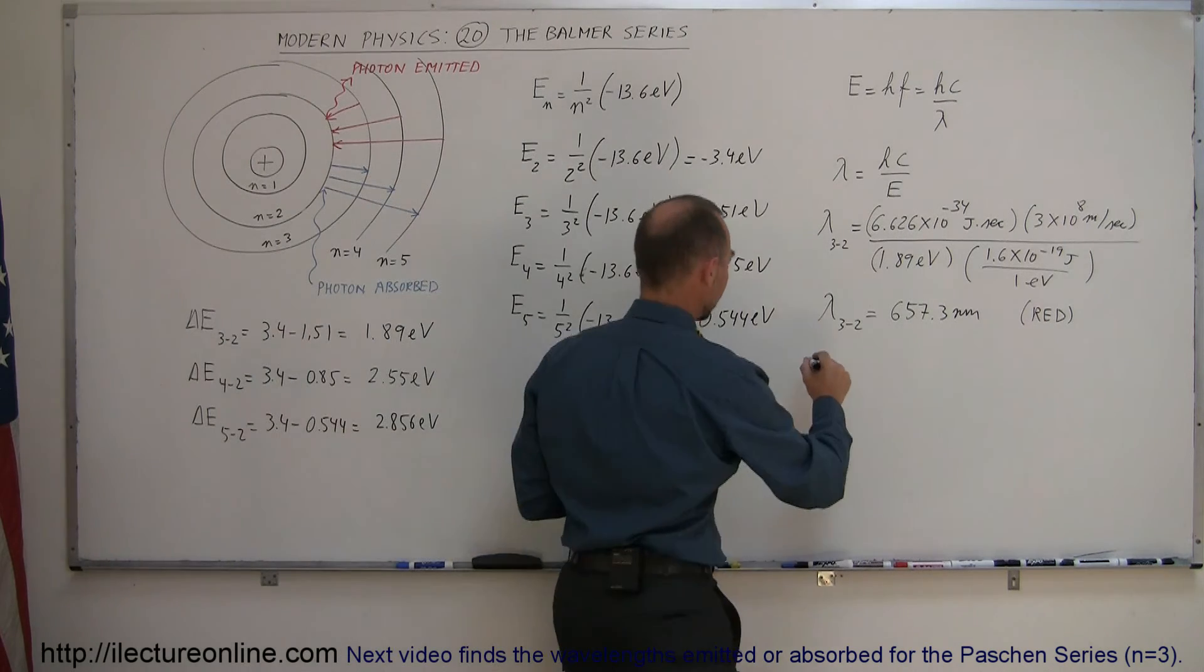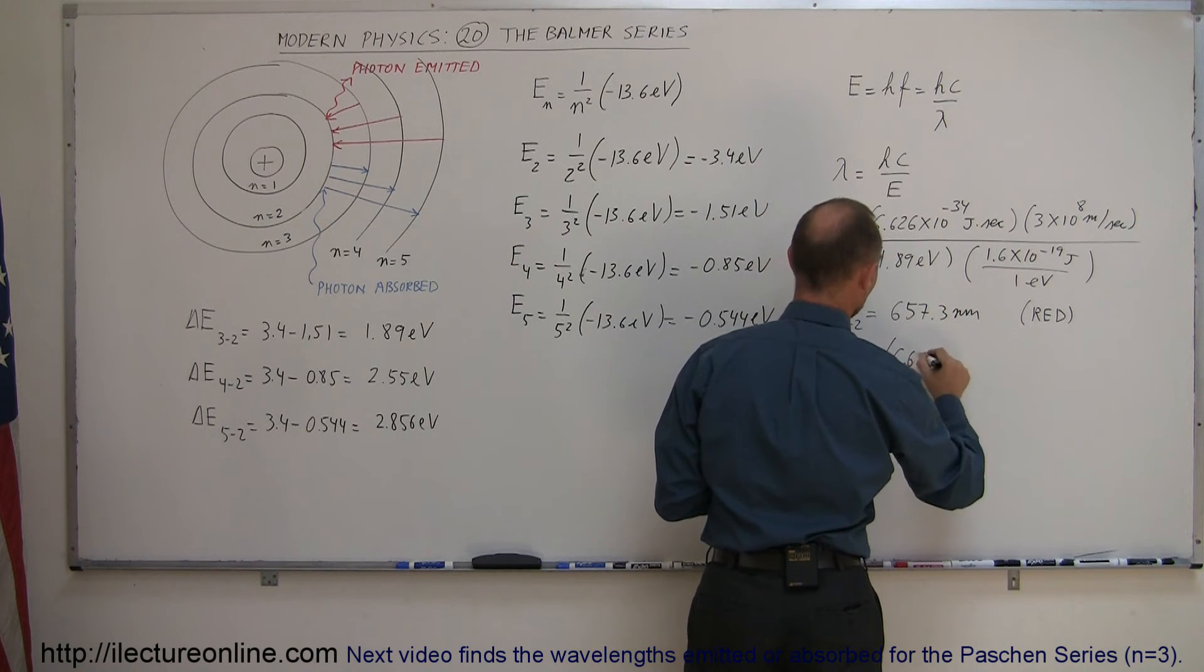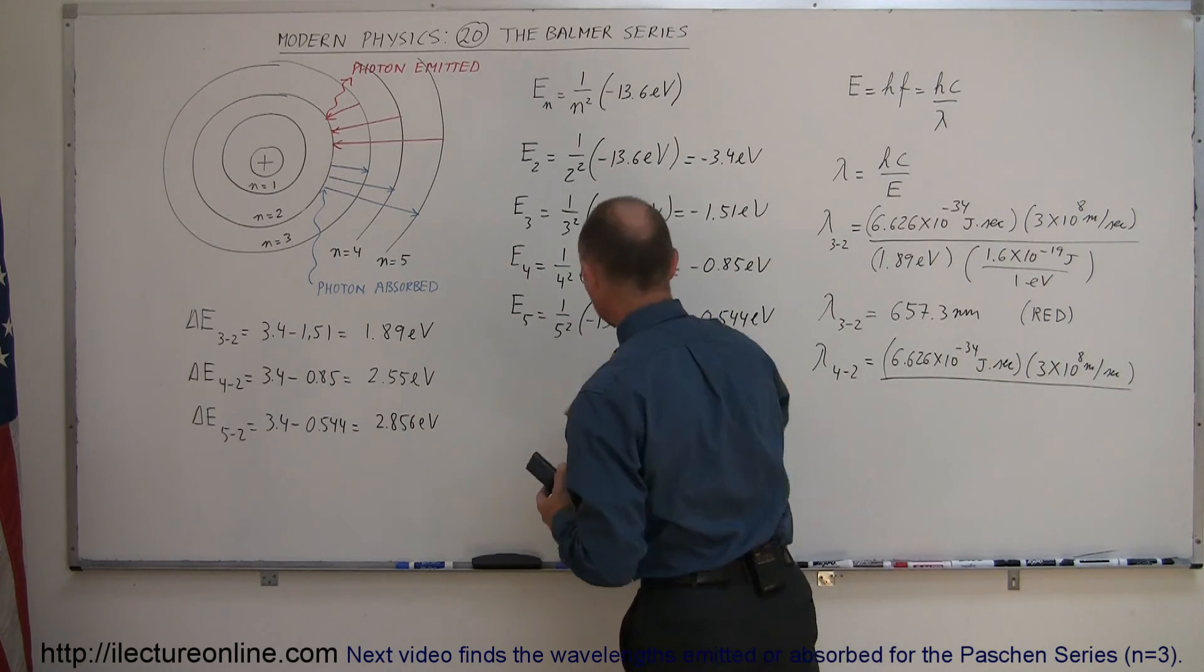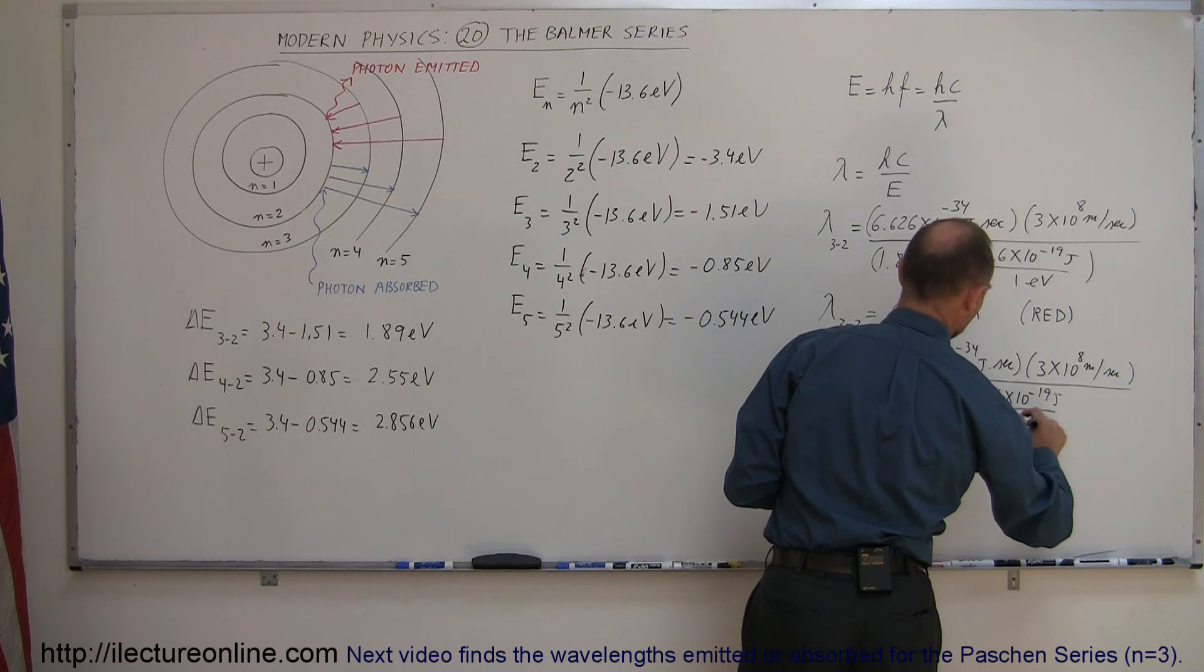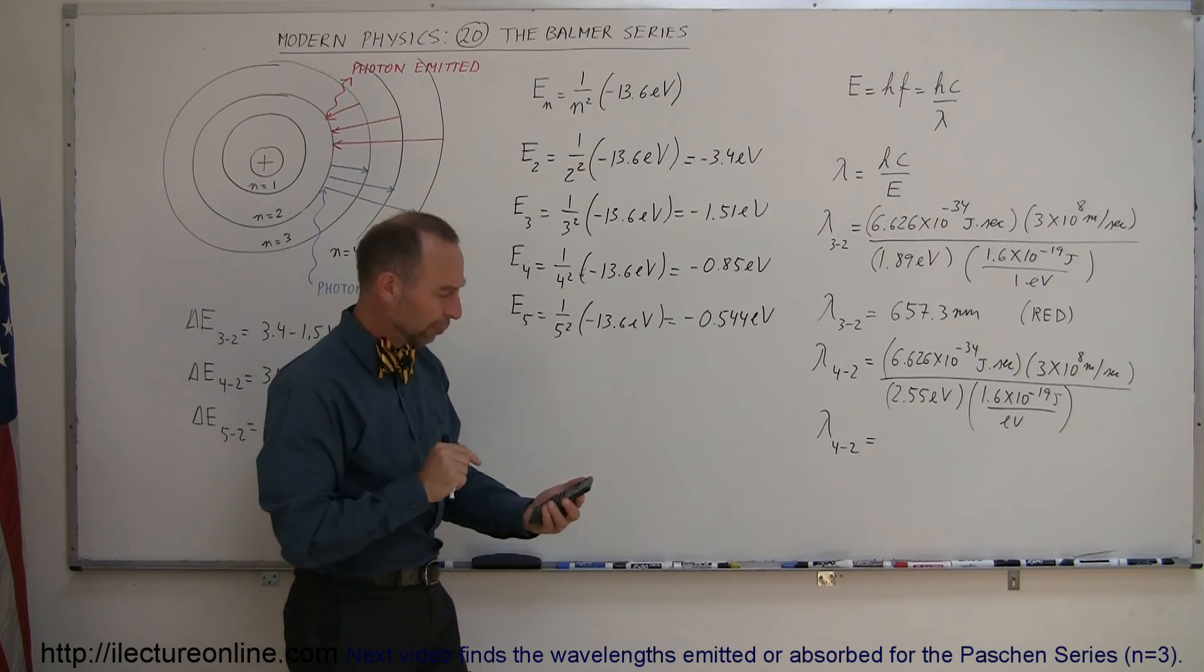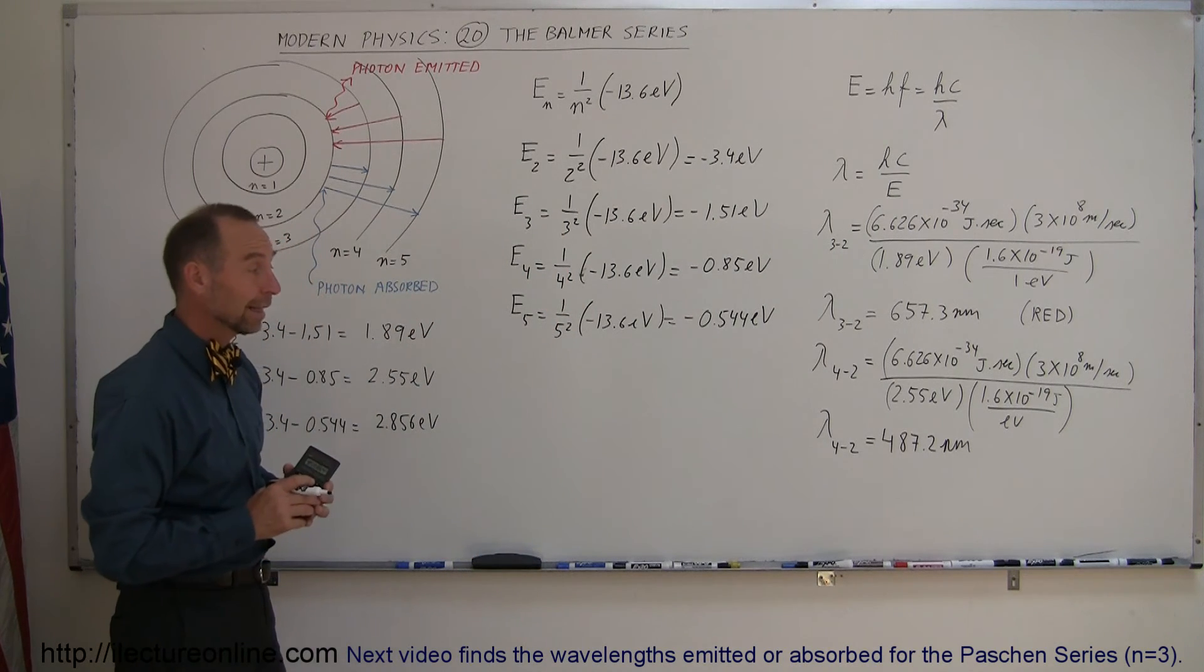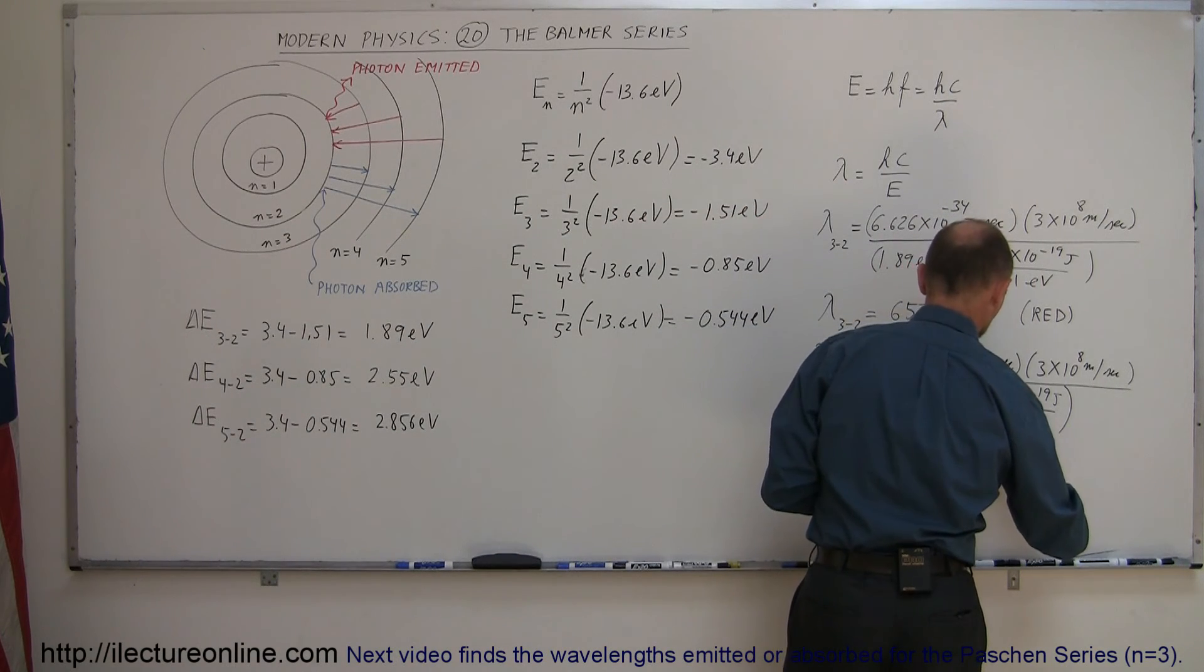Doing the same for going from 4 to 2, lambda going from 4 to 2. The only thing that changes is the energy difference, so it would be 6.626 times 10 to the minus 34 joules times seconds, times the speed of light, and all divided by the energy difference. In this case, it's 2.55 electron volts, and 1.6 times 10 to the minus 19 joules per electron volt. It looks like 487.2 nanometers. That looks more in the range of the blue light. It looks kind of like turquoise blue, so kind of a blue-green color.